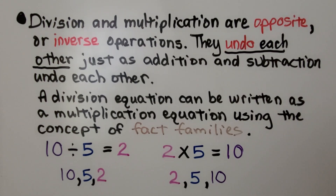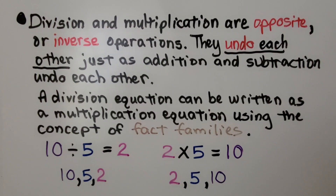Division and multiplication are opposite or inverse operations. They undo each other, just as addition and subtraction undo each other. A division equation can be written as a multiplication equation using the concept of fact families.